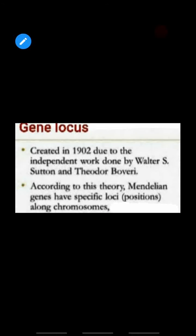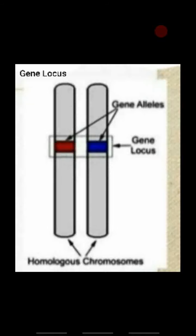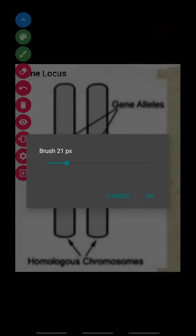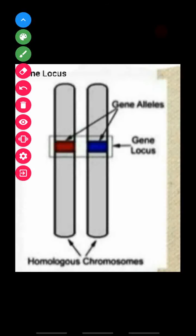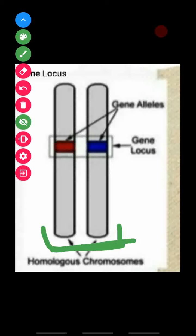What is gene locus? Sutton and Boveri discovered that on a homologous pair of chromosomes, different genes occupy specific positions. I will explain this diagrammatically. There are two homologous chromosomes in a pair. We call them homologous chromosomes because the gene for each character and the position of each character is the same on both chromosomes.